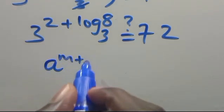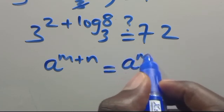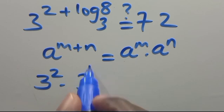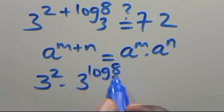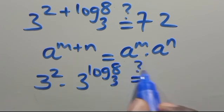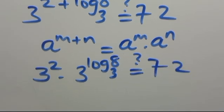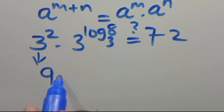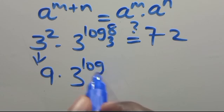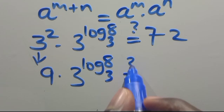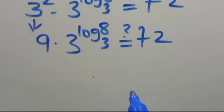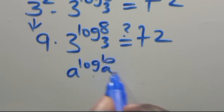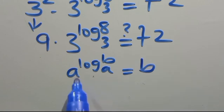Recalling that when we have a to the power of M plus N, this equals a to the power of M times a to the power of N. So we have 3 to the power of 2 times 3 to the power of log 8 base 3, giving us 9 times 3 to the power of log 8 base 3. Recalling that a to the power of log B in base A always equals B.